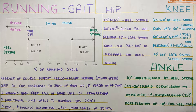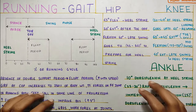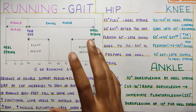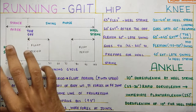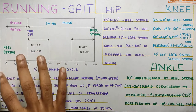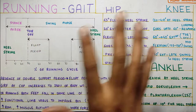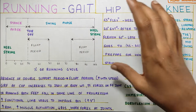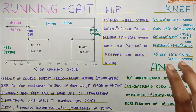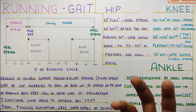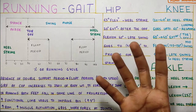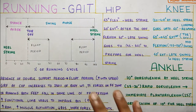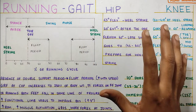In this video, we are going to talk about the running gait, where we will be discussing the phases of the gait and then we will see the kinematics — that is, what happens at the hip, knee, and ankle. The next video will be talking about the muscle activity to finish the running gait topic.